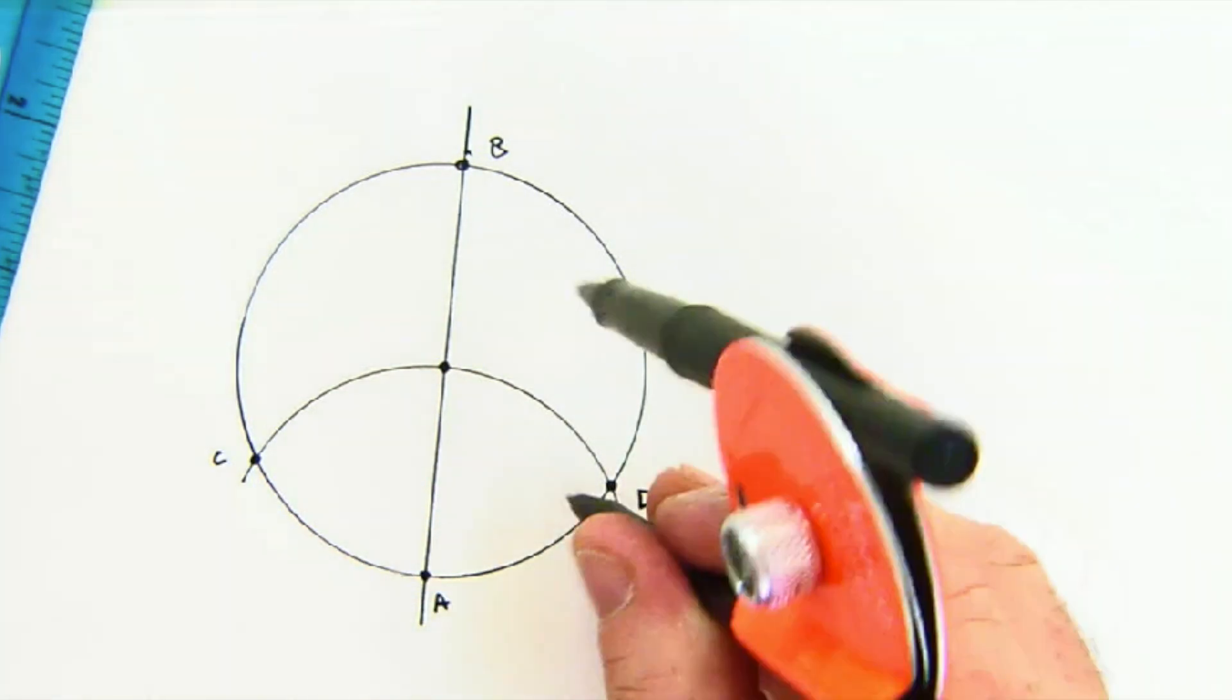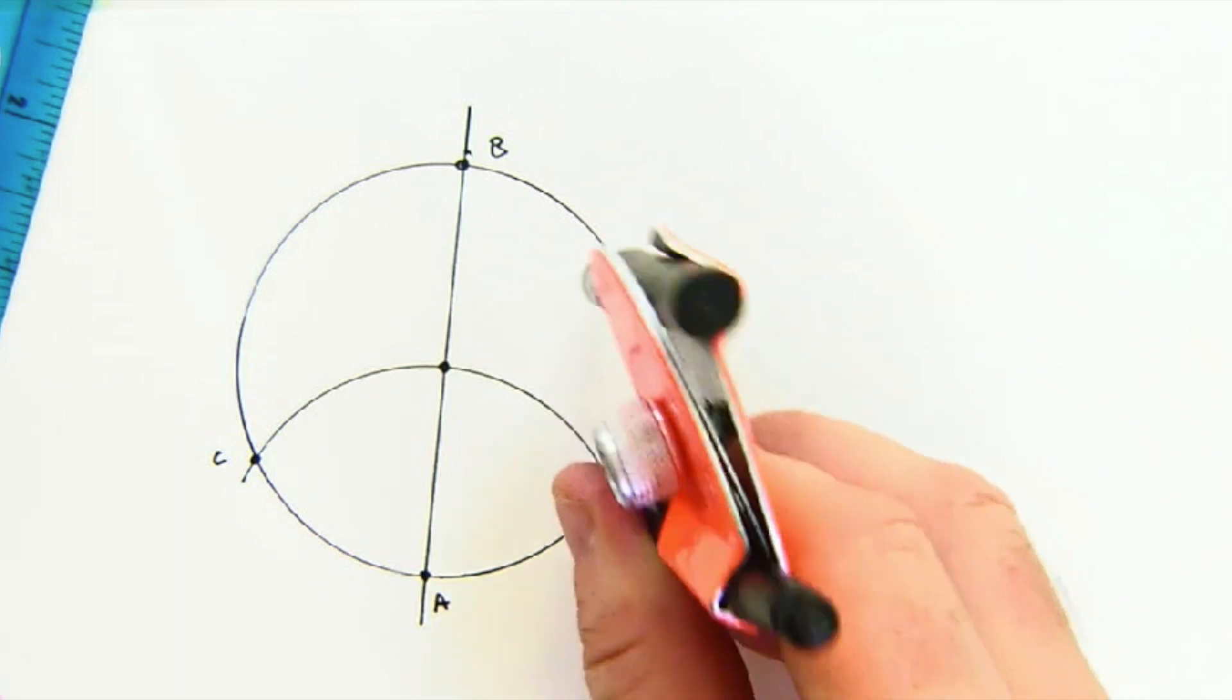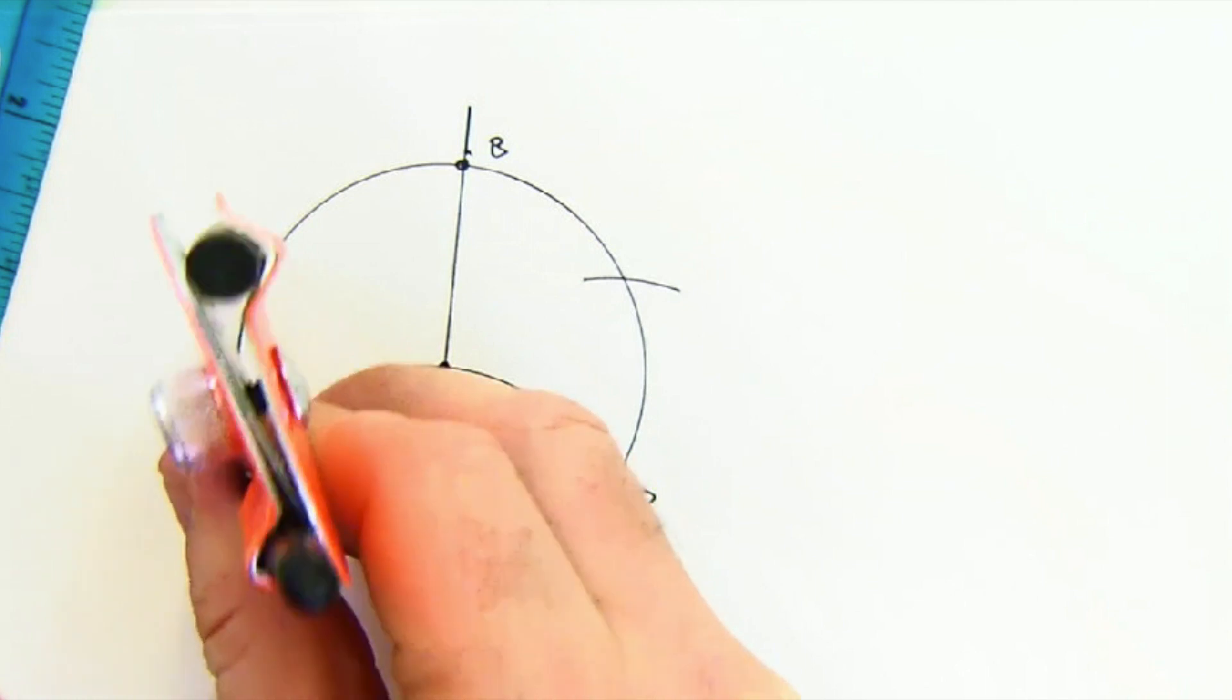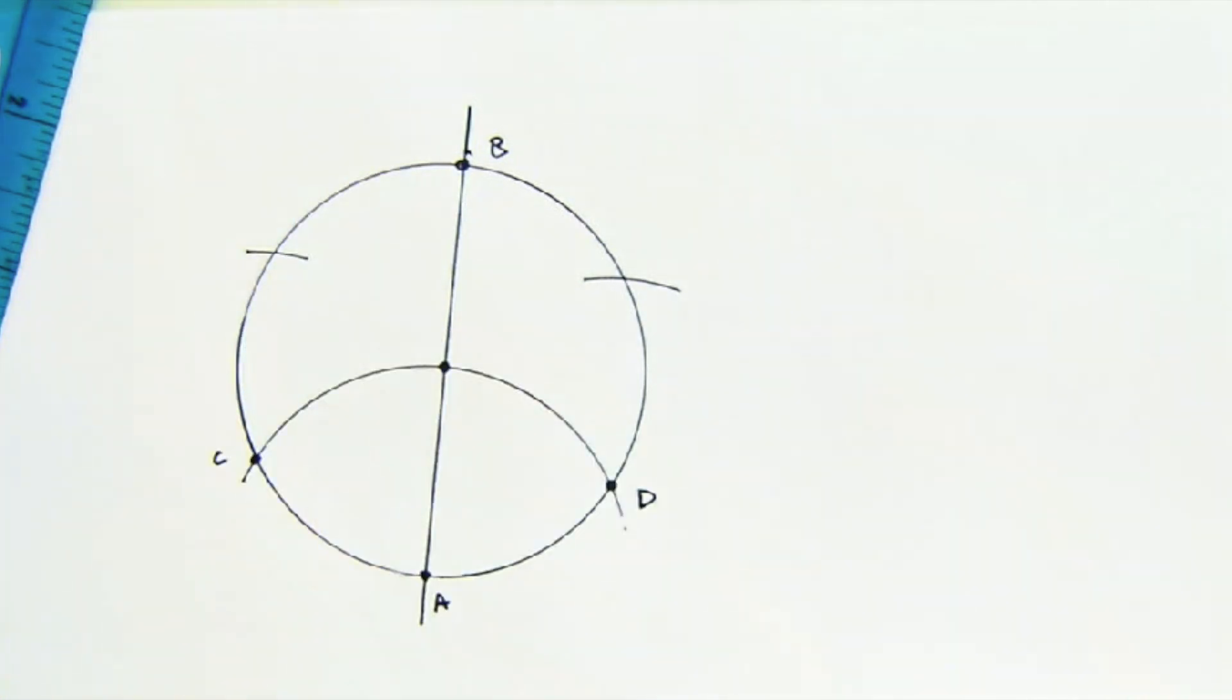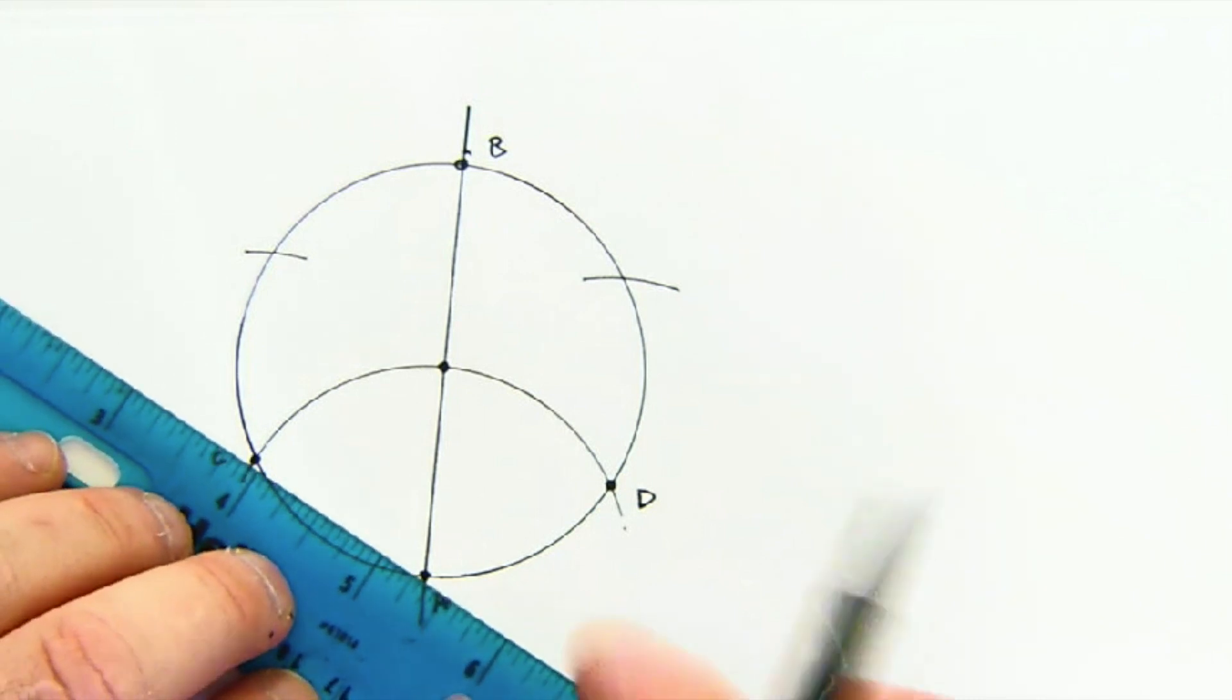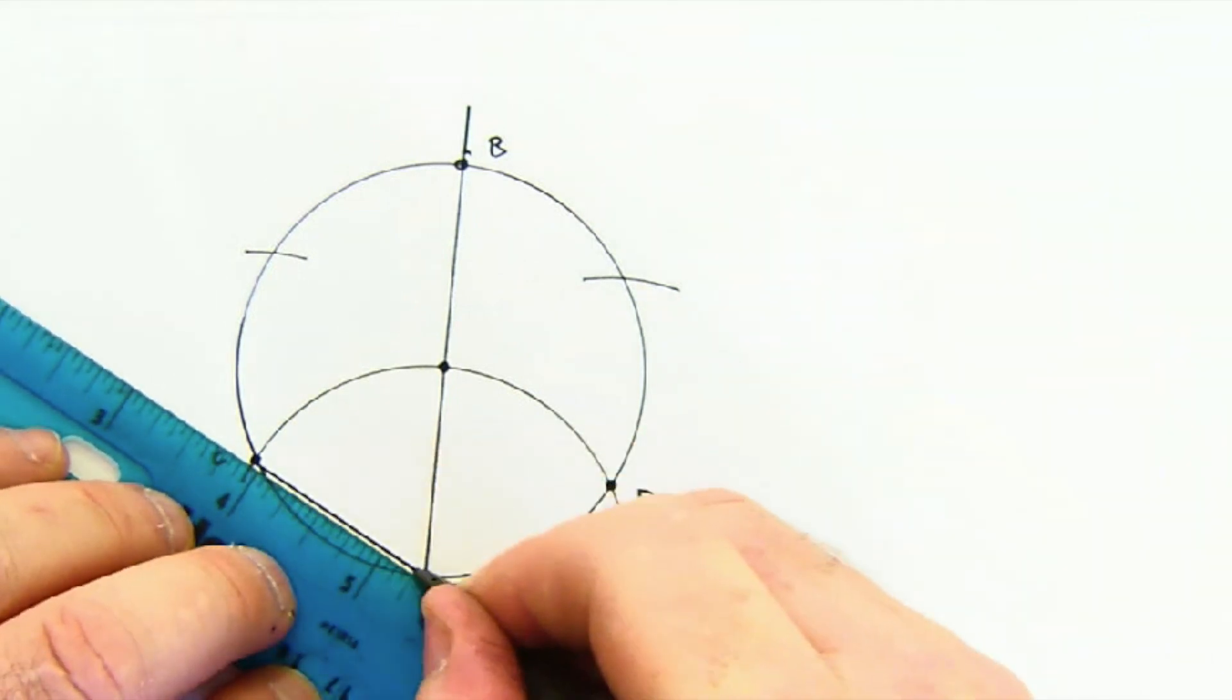So if we continue on here we could make a mark here as well as here. And it will also form another equilateral triangle in there. Actually I'll fill those in in just a minute. Let me first fill in the hexagon and then I'll show you where all these beautiful little equilaterals are hiding.